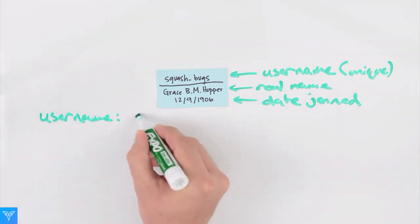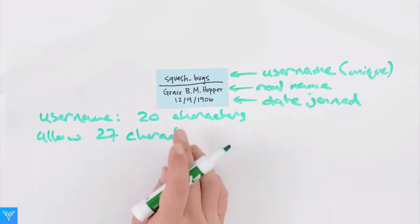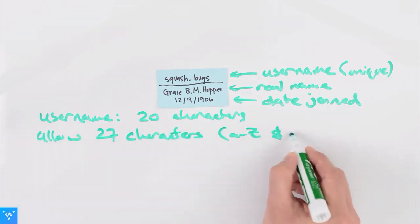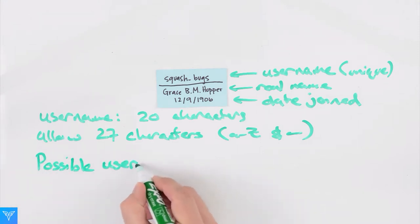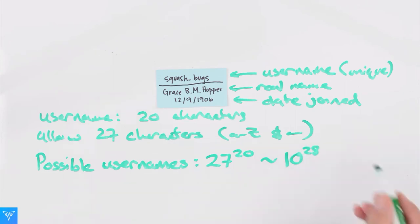If we limit usernames to 20 characters and only allow lowercase letters and underscores, there are 27 to the 20 or about 10 to the 28 possible usernames. This set of possible usernames is referred to as the universe of usernames and is generally much bigger than the actual number of users we have.